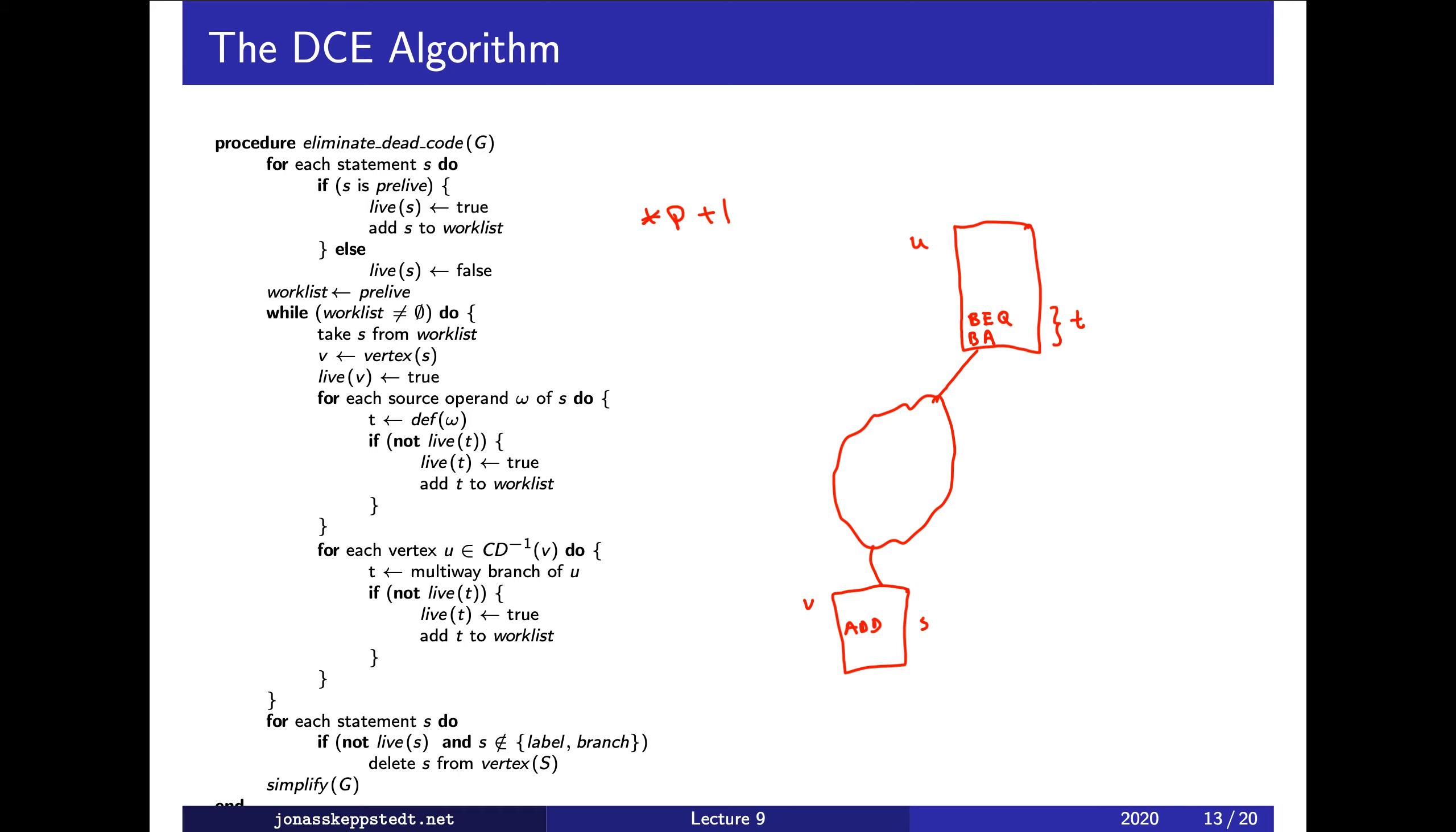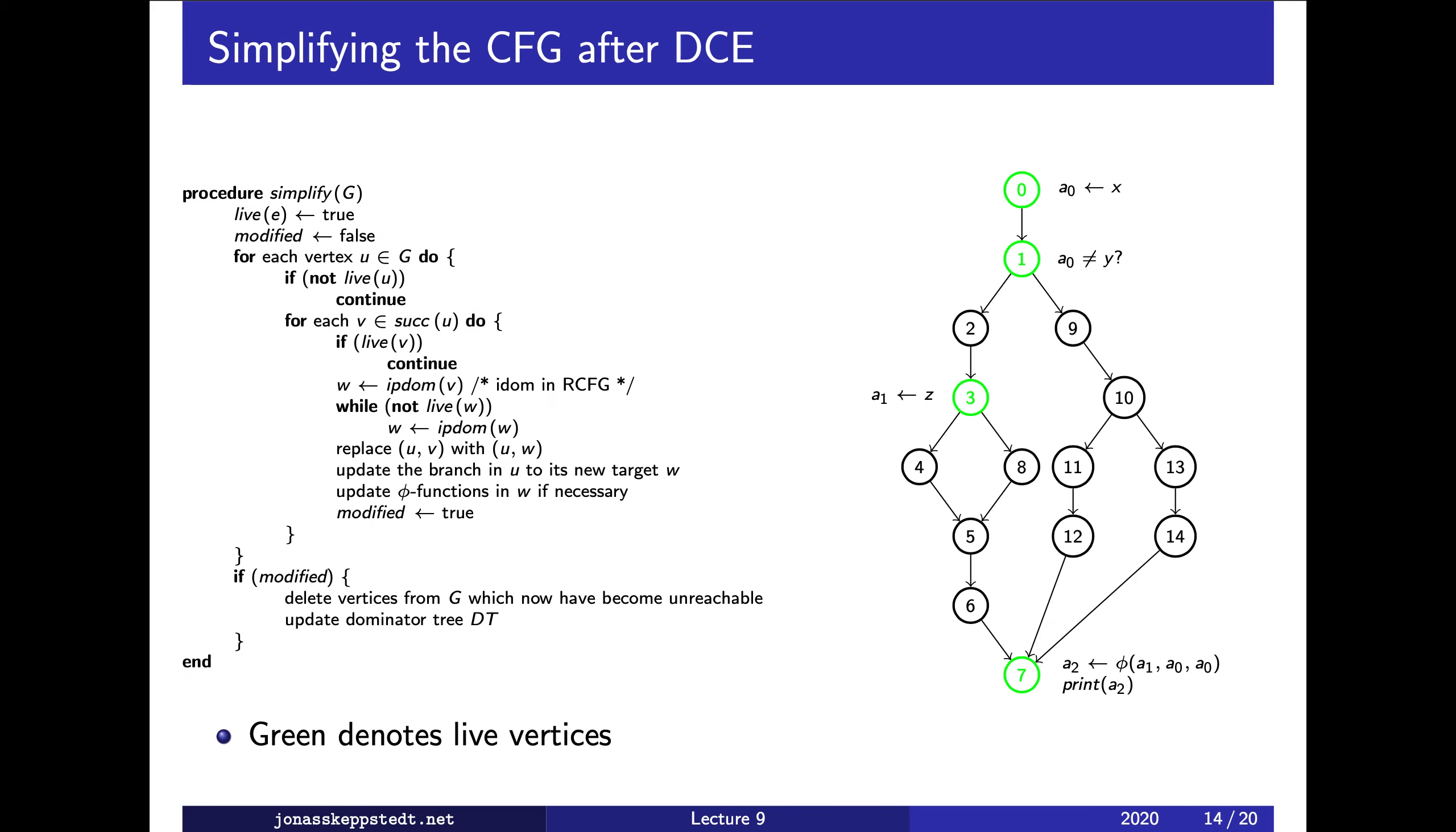Say we have this control flow graph where green denotes live vertices, meaning they have a statement which is live. What we want to do is avoid branching through vertices which have no live statement. For instance, if we are going to three, we will not jump to two first. Instead, we should just jump to three directly.